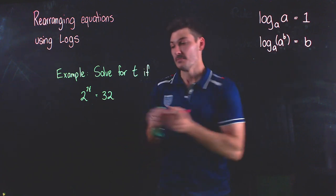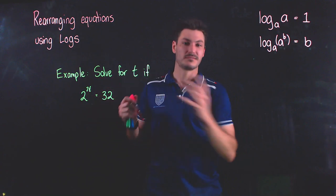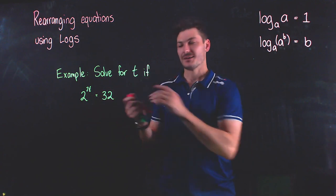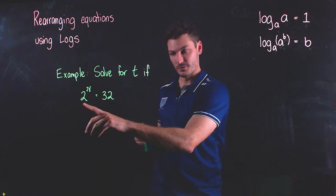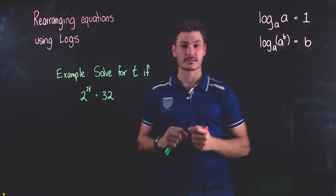So we're going to be using that concept because we want to get rid of this two to the power of, right, we just want t. So we're going to start by taking log base two. Notice that these two have to be the same, so we're going to take log base two of both sides.